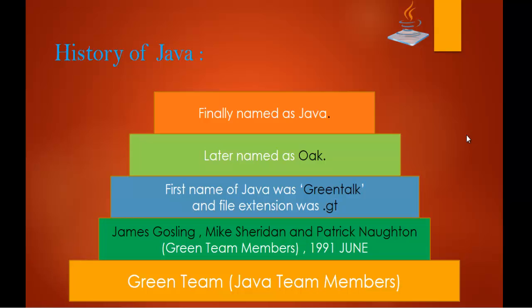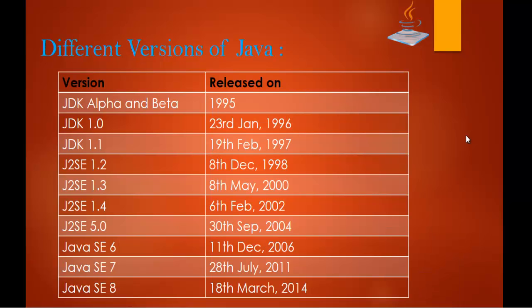That is the small history of how the names changed for the Java programming language over the years. Coming to the next slide, we can see the different versions of Java. The JDK — Java Development Kit — was first released in 1995, and the current version of Java is Java 8. You can go through the table to understand clearly which versions were released in which year.